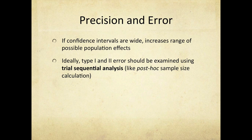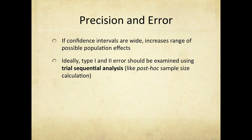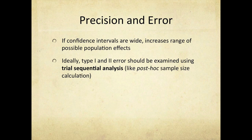A type 1 error is finding a statistically significant result when one doesn't exist; a type 2 error is not finding a statistically significant result when one actually does exist. This can be assessed using trial sequential analysis — an advanced form of analysis increasingly appearing in the meta-analysis literature — which acts like a post-hoc sample size calculation and helps avoid both types of error, especially in meta-analyses with a low number of included studies.